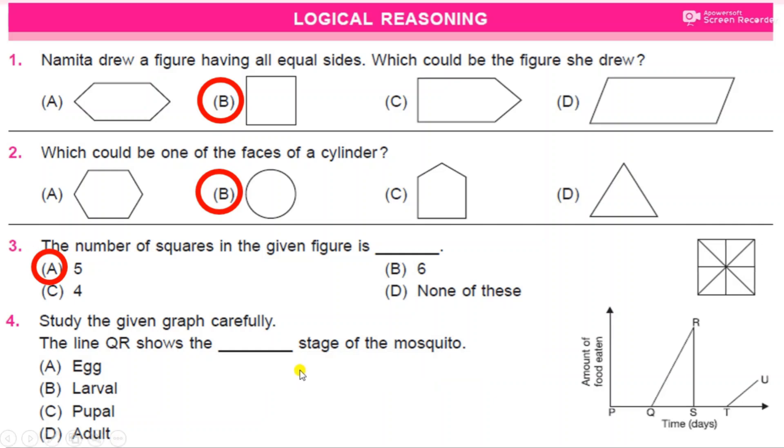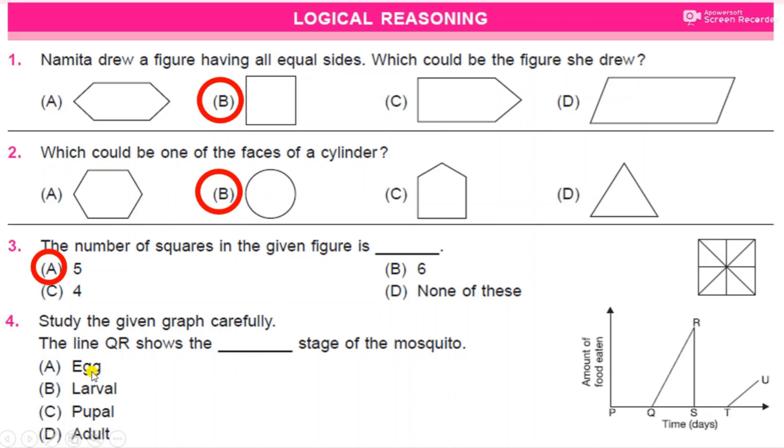Next question: study the given graph carefully. The line QR shows the dash stage of the mosquito. Look at the graph here. X-axis contains time in days, and Y-axis contains amount of food eaten. Look at the options: A egg, B larva, C pupa, D adult. So the line QR shows which stage of mosquito? It is larva.